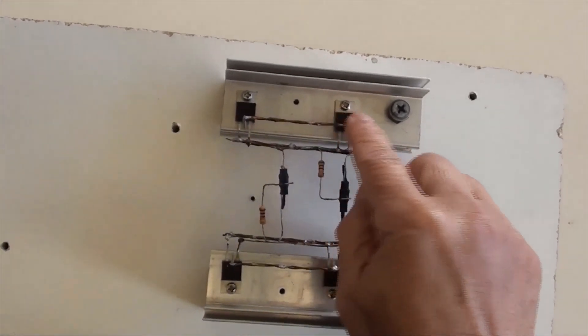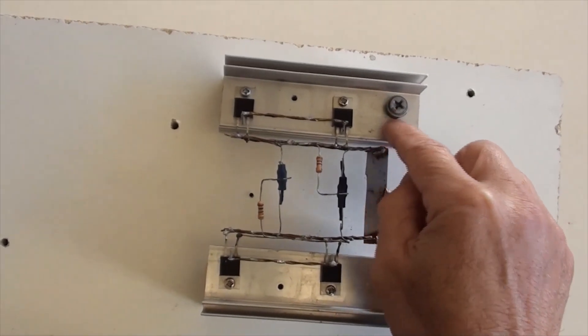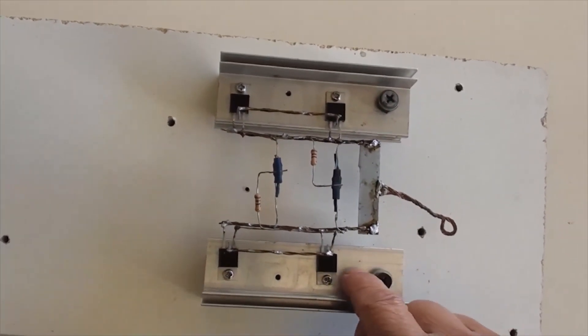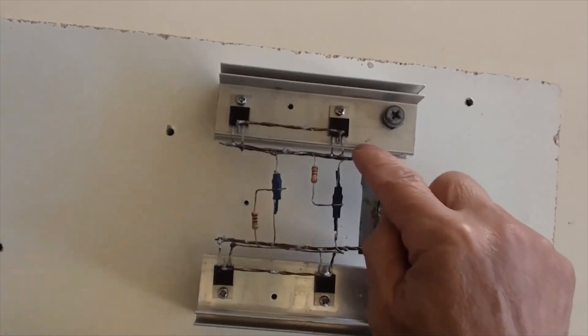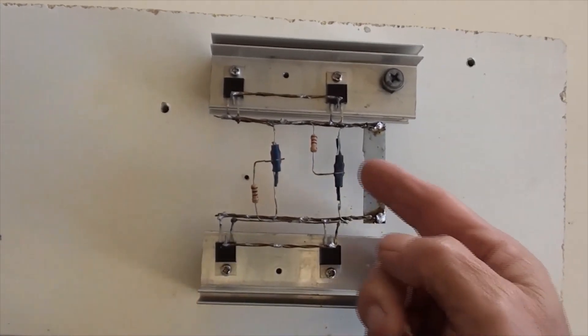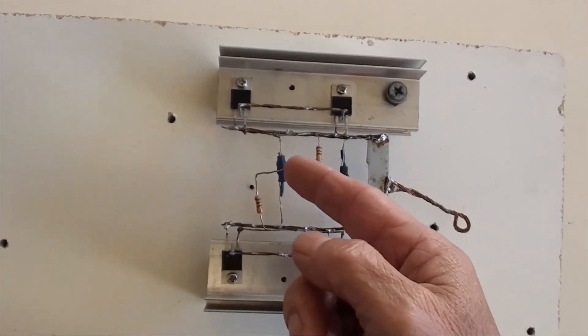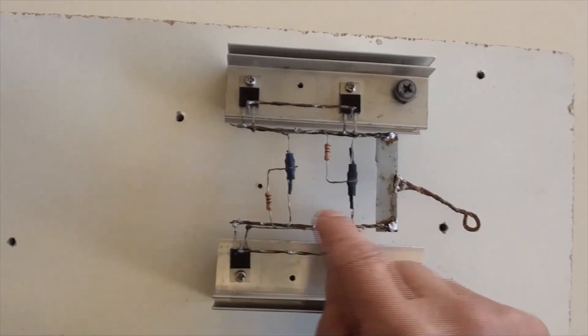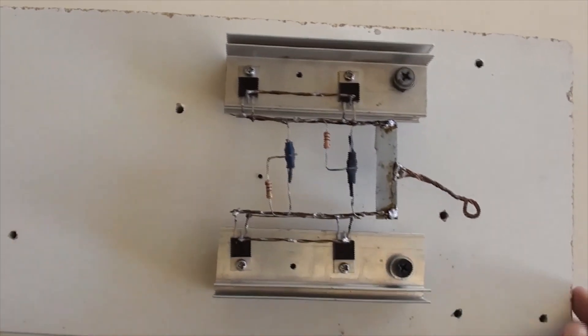The drain terminals of MOSFETs for that set soldered and connected together with their heat sink, and so did this set. The source terminals of all MOSFETs soldered together with this common ground or batteries negative. Two of 100 ohms resistors are here and two of 275 ohms resistors are there.